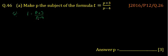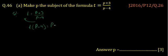We have to make p the subject of the formula, so we shift this value to the left side to the numerator. It becomes t multiplied by p minus 4 is equal to p plus 3.